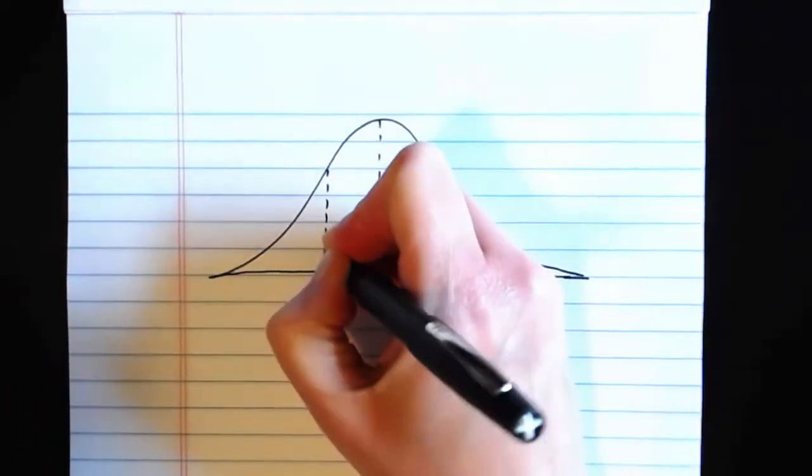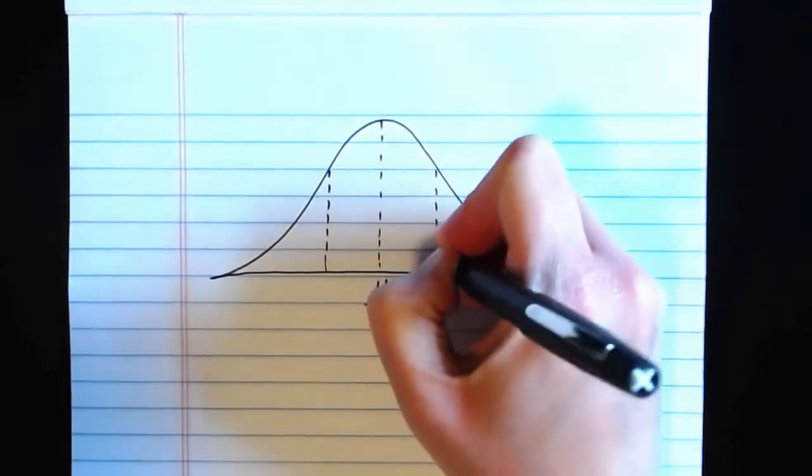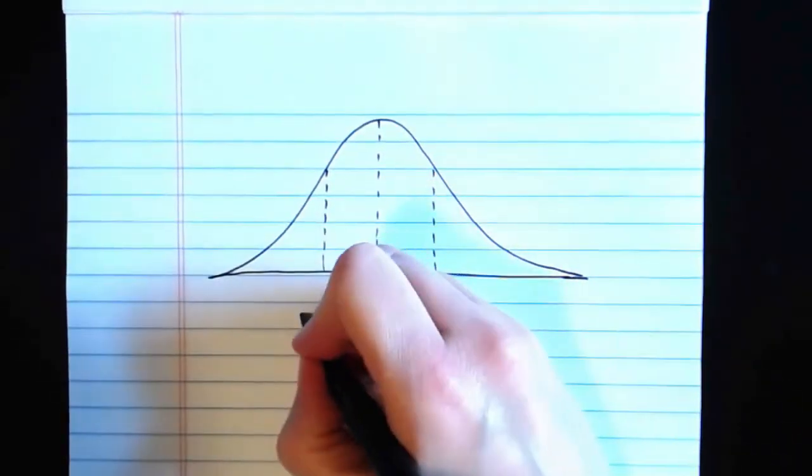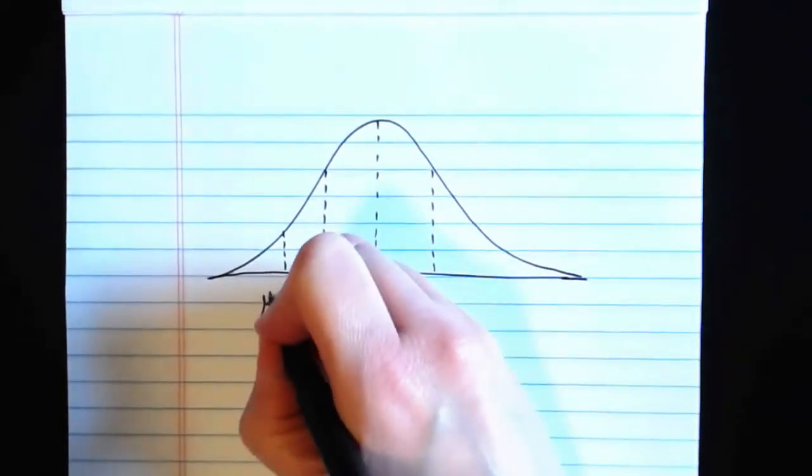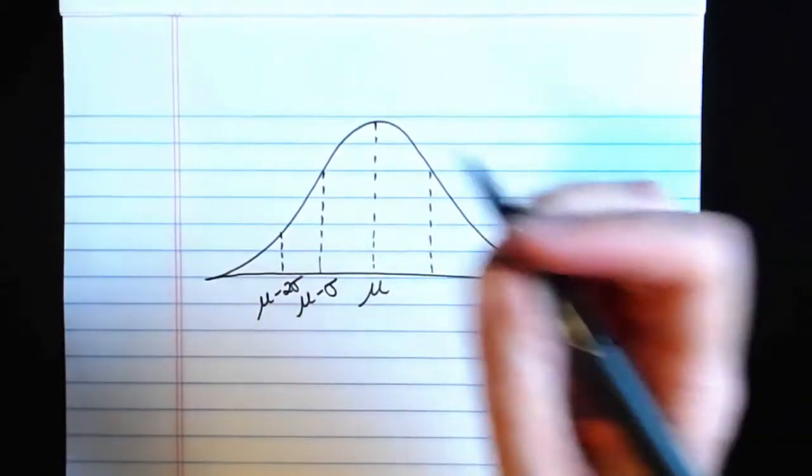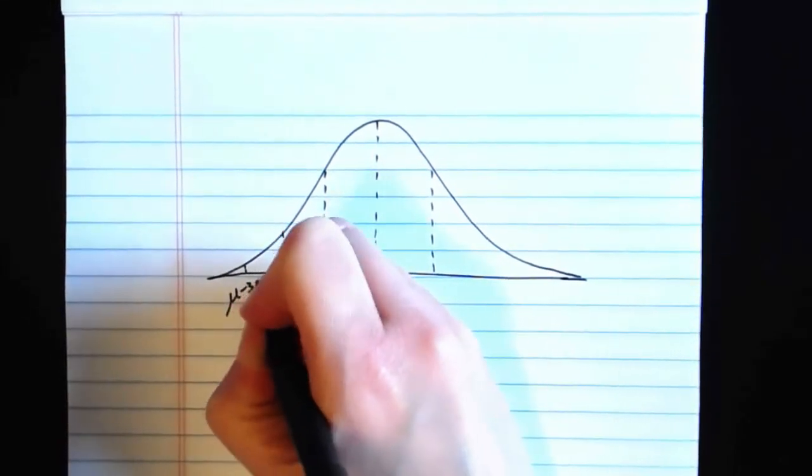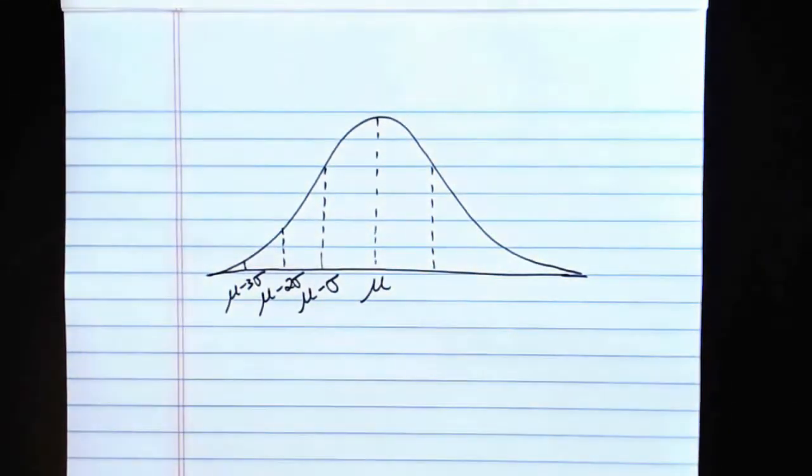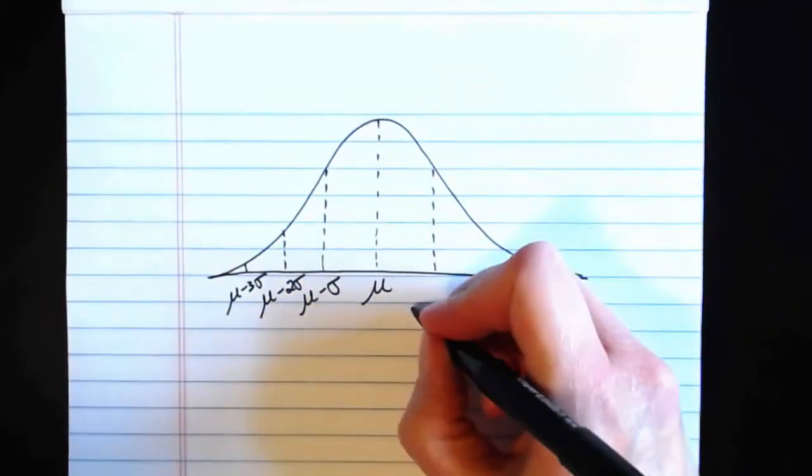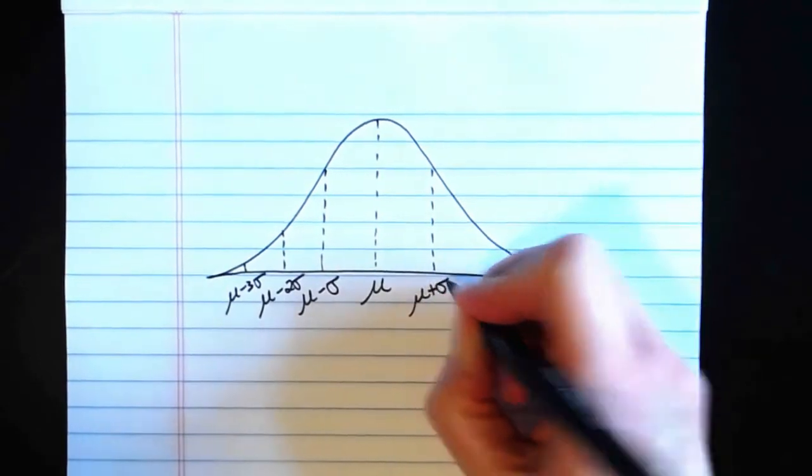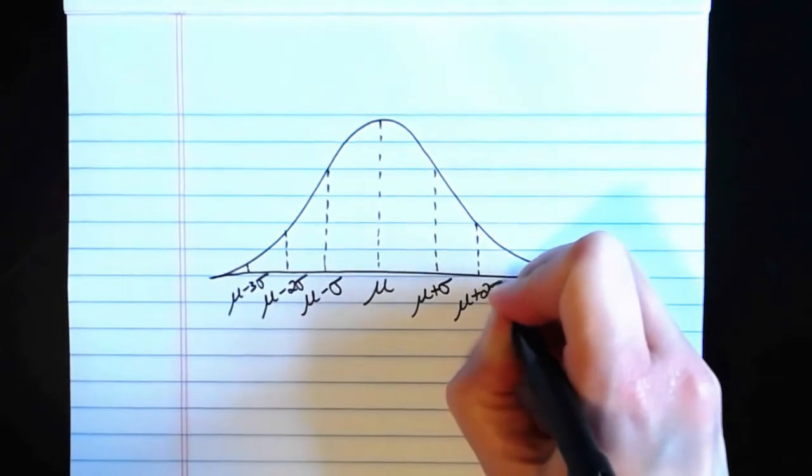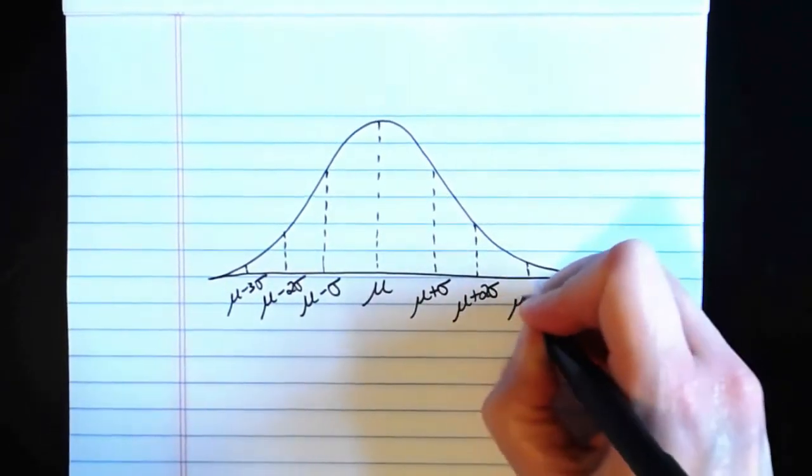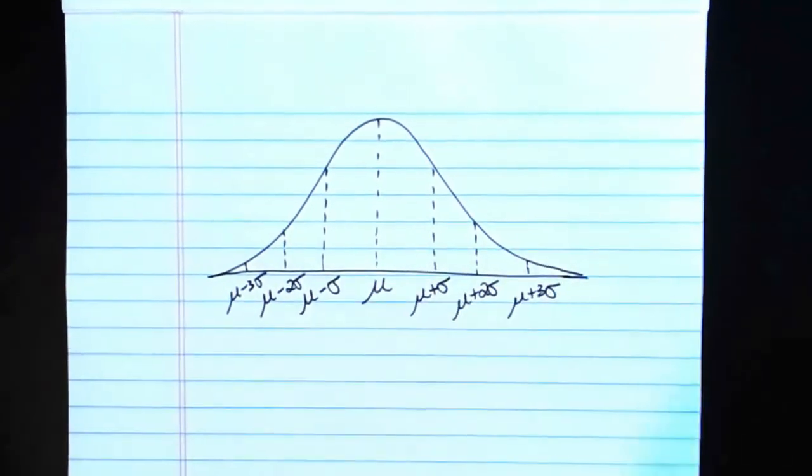And then from the mean, typically we measure outward in units of standard deviation. So this first tick mark here would be the mu minus one standard deviation. We would have a tick mark at mu minus two standard deviations, and a tick mark at mu minus three standard deviations. That tends to be a common way to label these. Similarly, when we go to the right, we have mu. This would be mu plus one standard deviation. Then we would have a tick mark at mu plus two standard deviations, and mu plus three standard deviations.